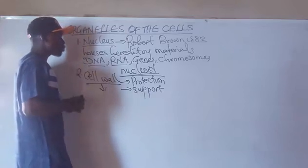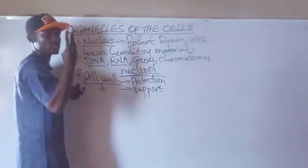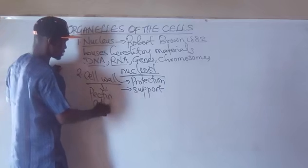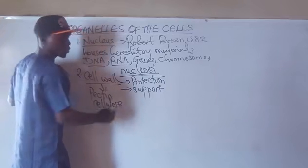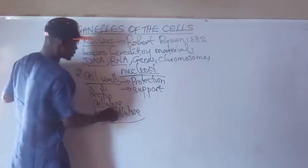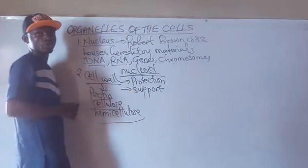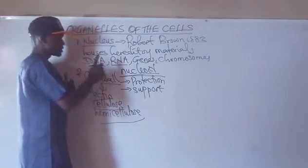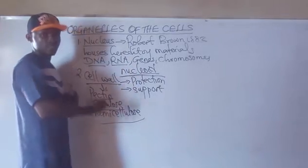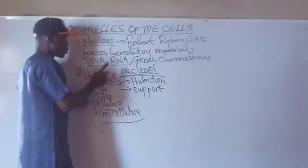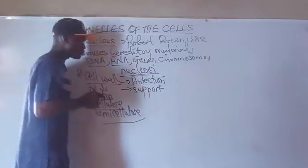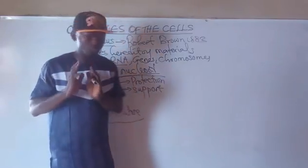The cell wall is made up of three components: pectin, cellulose, and hemicellulose. So these are the three components of the cell wall. Note that cellulose is found only in plants — animals do not have cellulose.